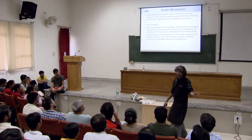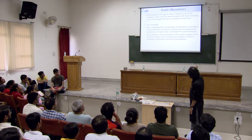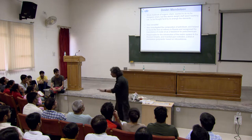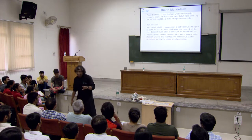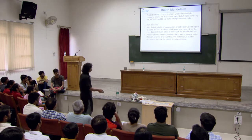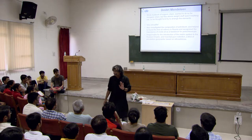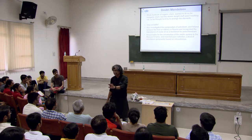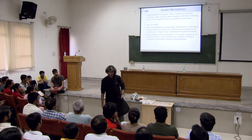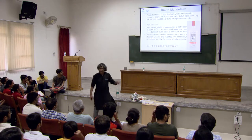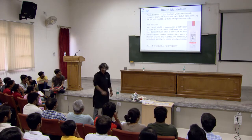Apart from the periodic table, Mendeleev did a lot: he was responsible for getting the petroleum industry started in Russia, for the metric system in Russia, and a lot of work on explosives. The one thing Mendeleev did not do is come up with the composition of vodka — the claim that vodka is 40% alcohol because of his thesis is just a marketing gimmick.